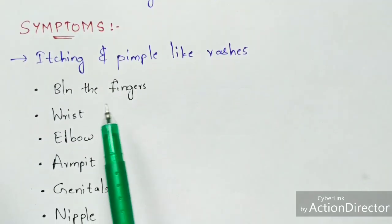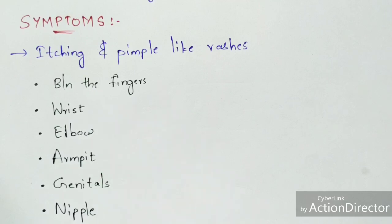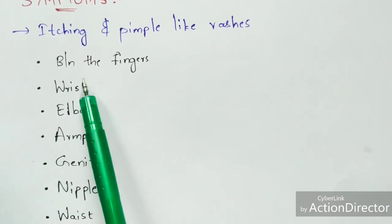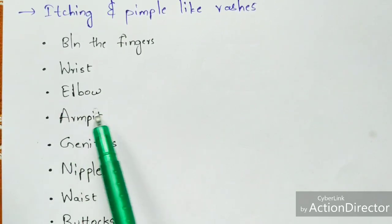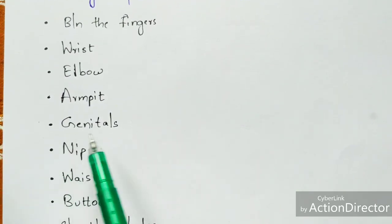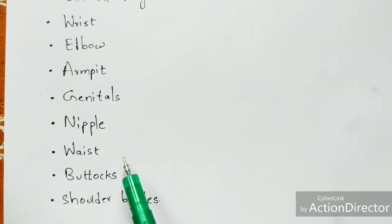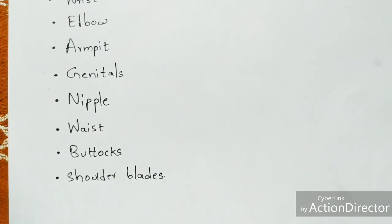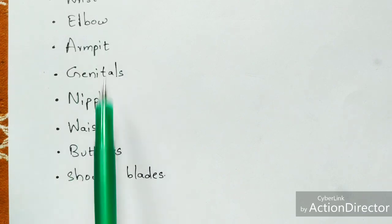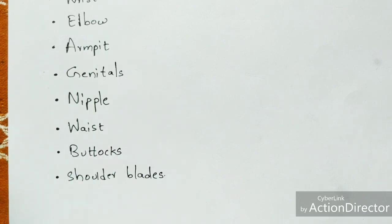The symptoms of scabies are itching and pimple-like rashes at the skin region. The regions where you can see these symptoms include: between the fingers, at the wrist, elbow, armpit, external genitals, nipples, waist, buttocks, and shoulder blades. So this is about scabies. I hope you understand this life cycle and symptoms. If you like this video, please like, subscribe, and comment in the comment box.